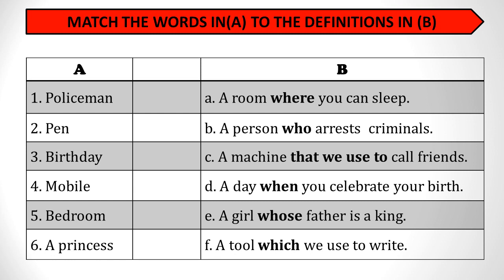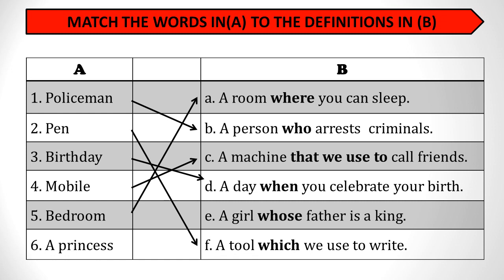What is the definition for policeman? A person who arrests criminals. What about pan? A tool which we use to write. What about birthday? A day when you celebrate your birth. What about mobile? A machine that we use to call friends. Bedroom: a room where you can sleep. Princess: a girl whose father is a king.